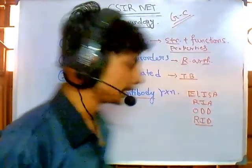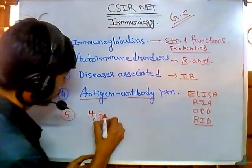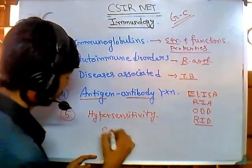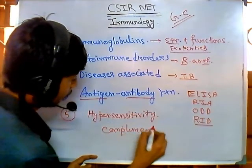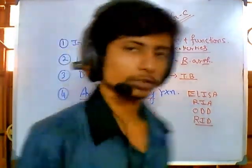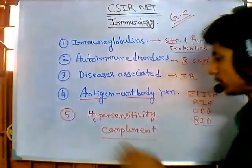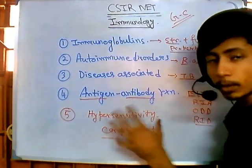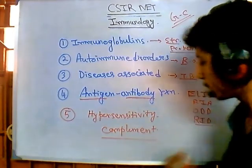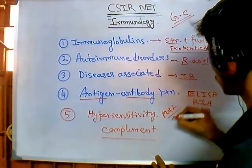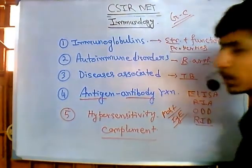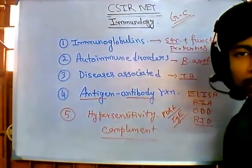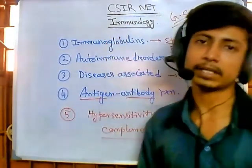Also understand anaphylaxis, hypersensitivity, and complement — these are also part of immunology. If you have time, give some attention here. Majorly, Type 1 and Type 2 hypersensitivity are very important. Most important is Type 1, which is mast-cell mediated or IgE-mediated hypersensitivity, as seen in the human body.